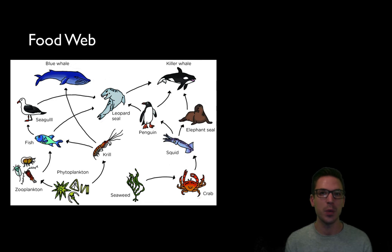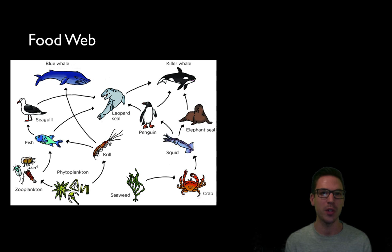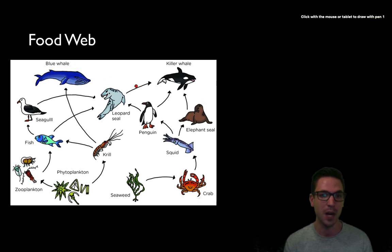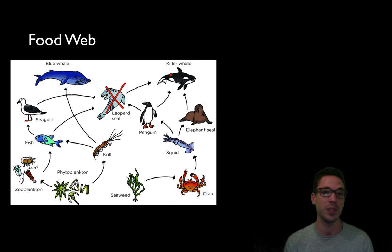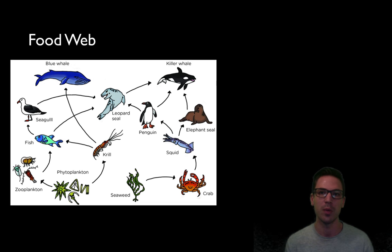A food chain is a simplistic way to show feeding relationships from one organism to the next, but in reality organisms feed on various types of other organisms. A more complete way to show this is through a food web — a bunch of food chains showing all the feeding relationships in an ecosystem. You should be able to look at a food web and understand how energy is flowing and make predictions. For example, if leopard seals went extinct, we might see an increase in fish population, a decrease in krill, and a decrease in killer whales due to less food.